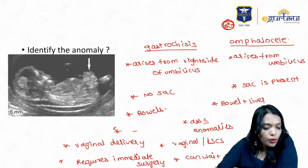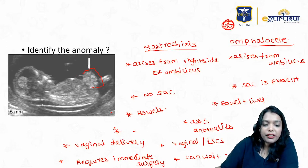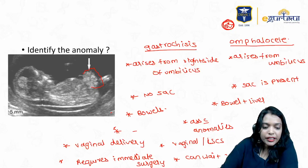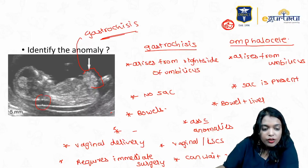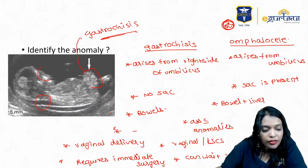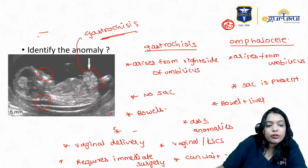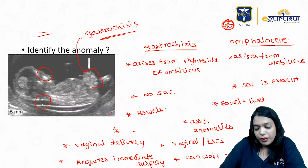This image shows no sac — you can see irregular masses coming out from the umbilicus. As there is no sac, this is nothing but gastroschisis. Also in this image, there is increased nuchal translucency and the nasal bone is not visible. Normally you should see the nasal bone as two parallel white lines, but you don't see the nasal bone in this picture.